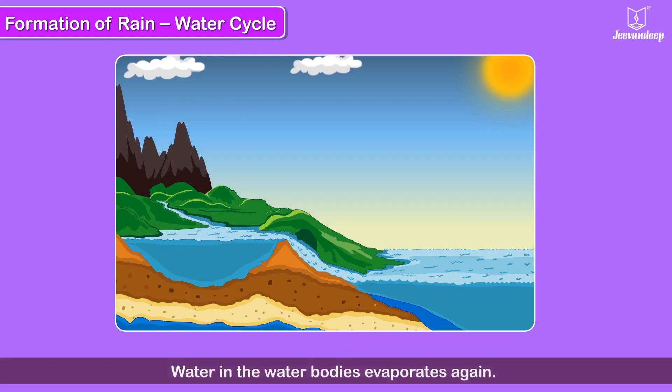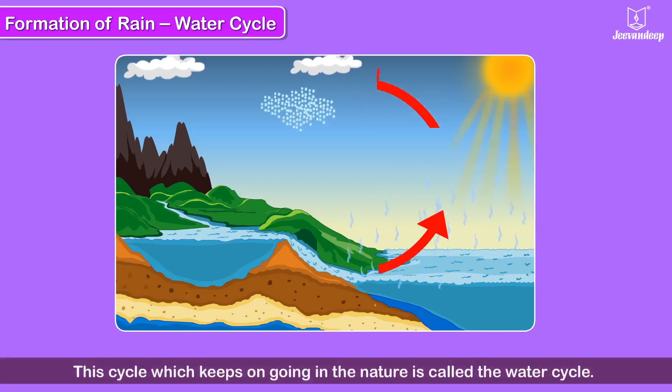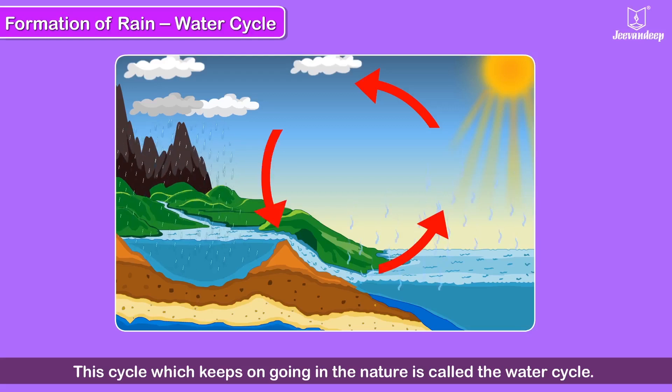Water from rivers, lakes, seas, and oceans evaporates again. This cycle keeps going on in nature. This is called the water cycle.